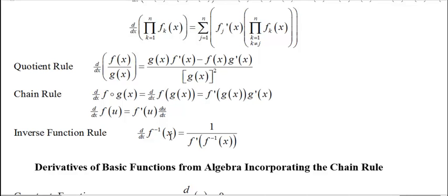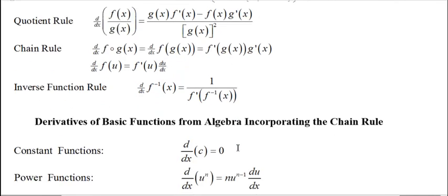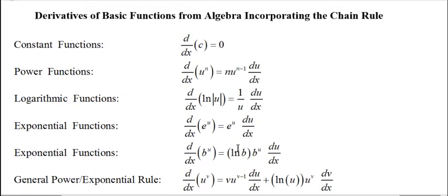The inverse function rule allows us to find a derivative this way. The derivative of the inverse of f of x is 1 over f prime at f inverse of x. We know how to find a few things. The derivative of a constant function is 0. If you have a power function, variable base, constant power, the derivative of u to the n is n times u to the n minus 1 times the derivative of u.